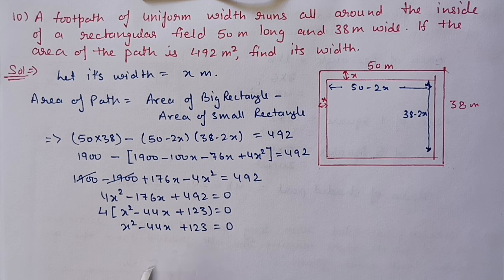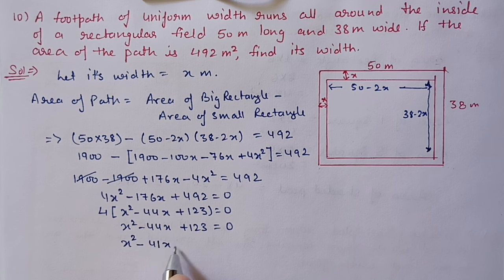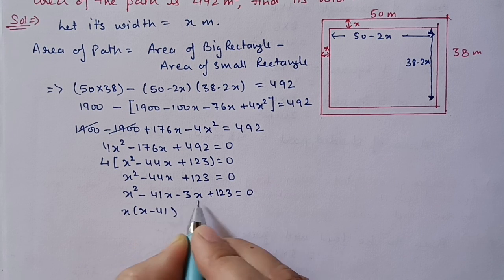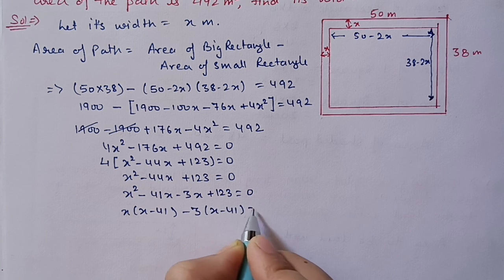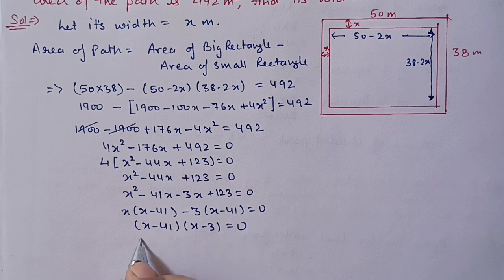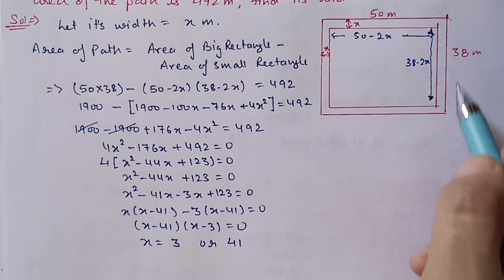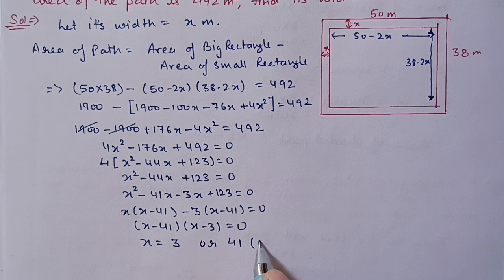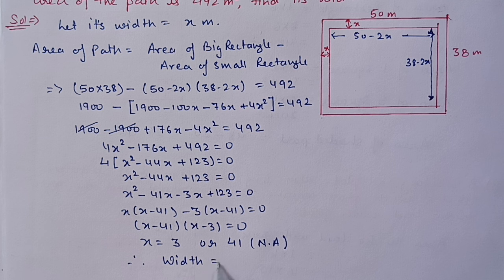Now we factorize. We need factors of 123 such that their sum gives minus 44: those are minus 41 and minus 3. So (x minus 41)(x minus 3) equals 0, giving x equals 41 or x equals 3. Since the field width is 38 meters, x equals 41 is not applicable. Therefore, width equals 3 meters.